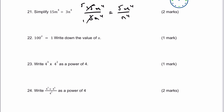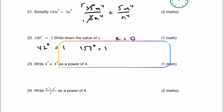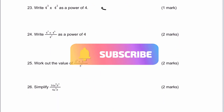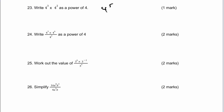Number 22: something to the power of x equals 1 — write down the value of x. This is something you need to know: x equals 0. Any number to the power of 0 equals 1. So 42 to the power of 0 equals 1, or 157 to the power of 0 also equals 1. Number 23: write 4 to the 3 times 4 to the 2 as a power of 4. That's simply 4 to the power of 5, because we add the indices when multiplying.